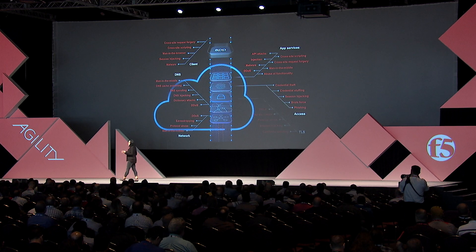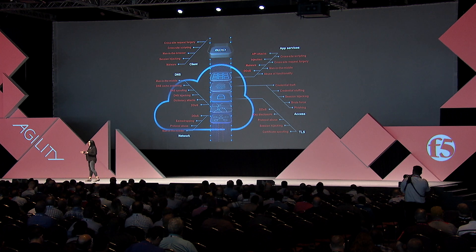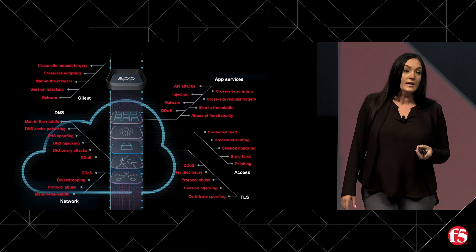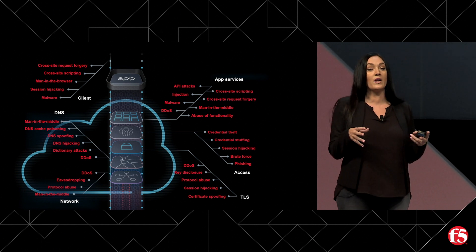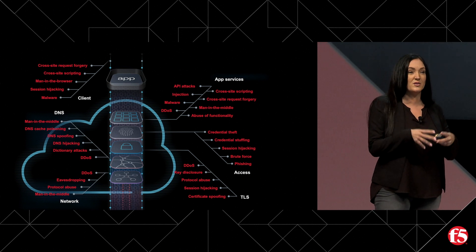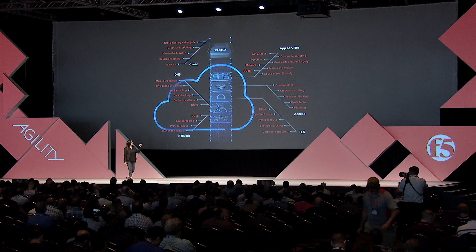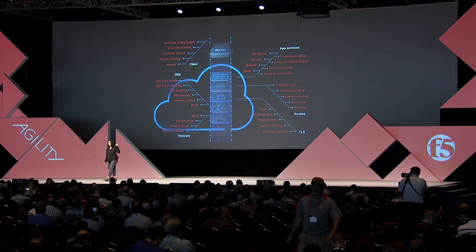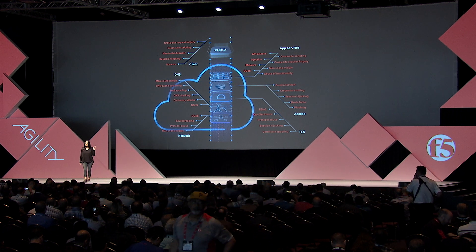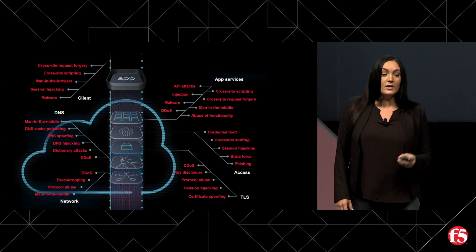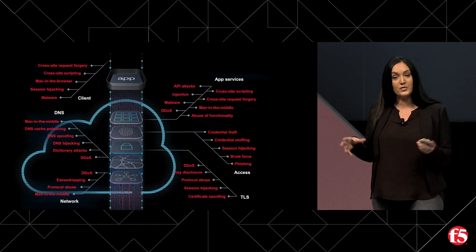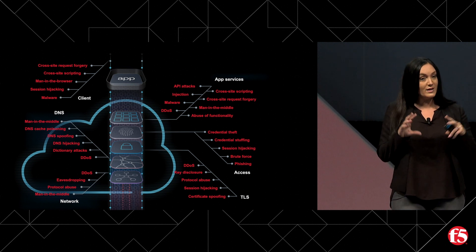A year ago, we started at Labs working on what is now called the Application Protection Report, available on Labs. In the process, we had to come up with a new model for how to look at application security, because there wasn't really a good way to look at it holistically. If we're focusing on application security because applications are the targets, what are the layers of an app? What do we need to protect? What are all the threats? We came up with this model — it's quite overwhelming, but this is literally as simple as we could get it.